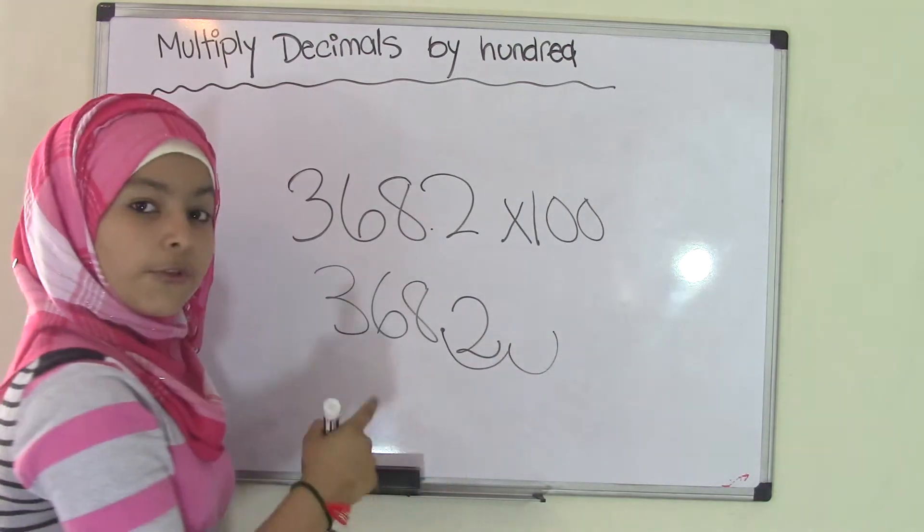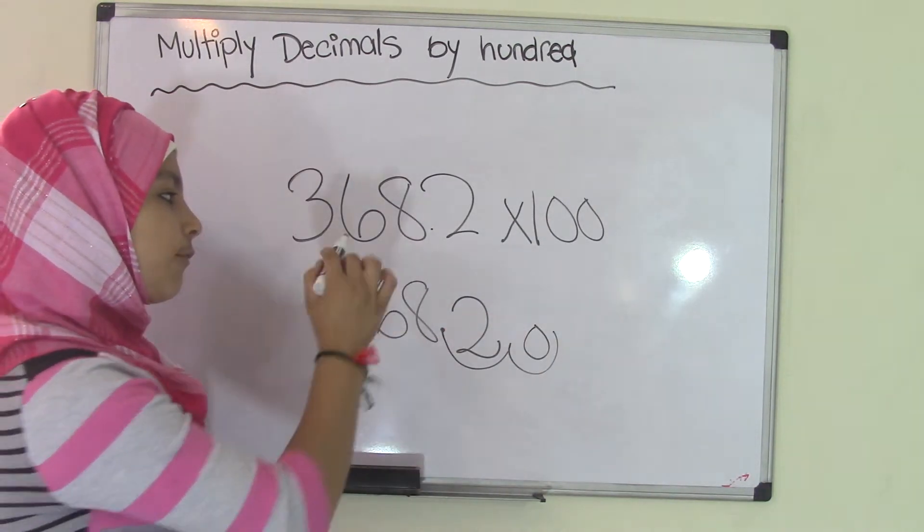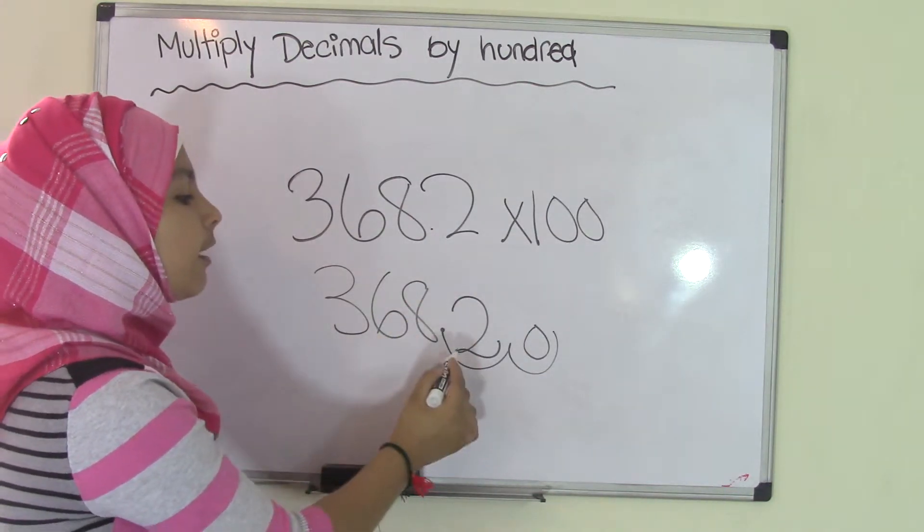So take this and one, two. And remember the gap is always zero. That means the product of 368.2 times 100 equals 36820. Once again you do not have to add the zero.